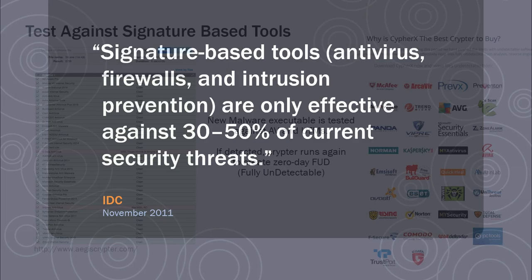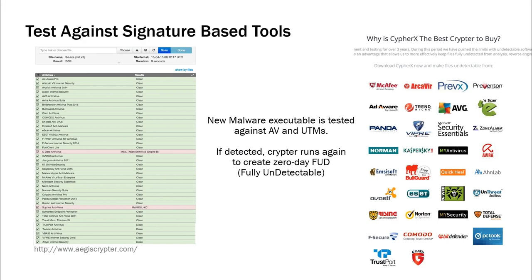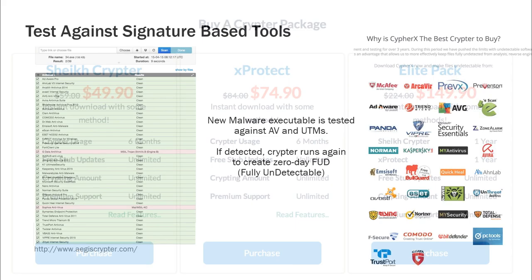This quote from International Data Corporation from 2011 shows that signature-based tools — antivirus, firewalls, intrusion prevention — are only effective against 30 to 50% of security threats. Vendors like Symantec have publicly acknowledged that traditional signature-based virus detection tools and techniques just don't work anymore. The malicious actors are far ahead of the technology right now, and there's really a race to develop the next generation of solutions to protect us.